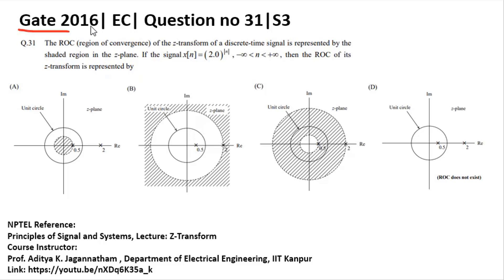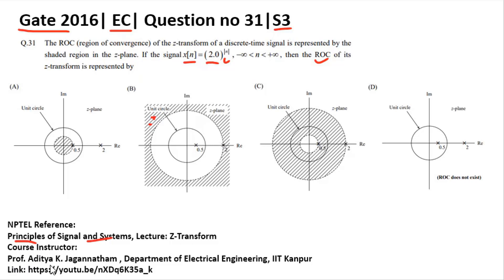This question was asked in GATE 2016 Electronics and Communication Engineering paper, Set 3. You are given a signal x[n] = 2^|n| and you need to find the ROC of its Z-transform. The options show the ROC as shaded regions in the z-plane. The reference for this question is Principles of Signal and Systems by Professor Adhika Jaganatham, IIT Kanpur — see the lecture on Z-transform.